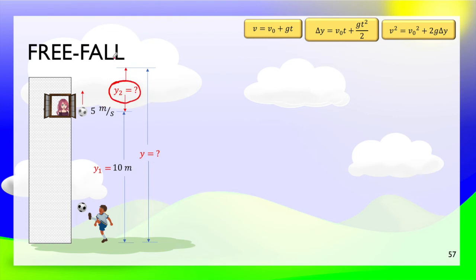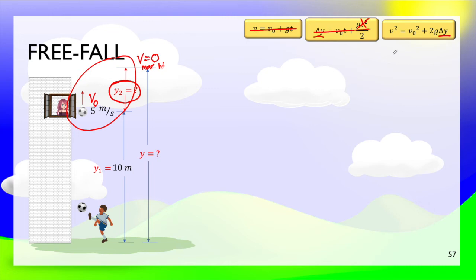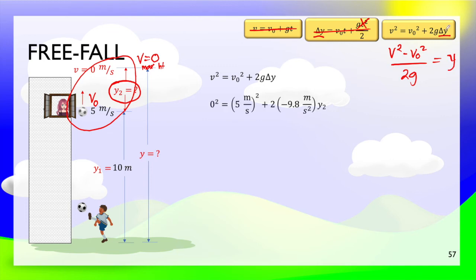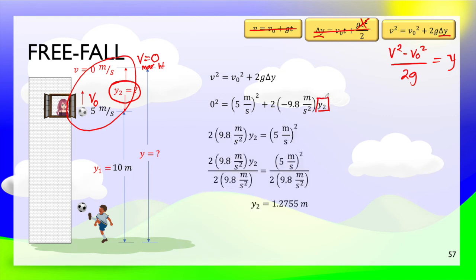To find Y2, we focus on the segment from the window to the maximum height. At the max height, velocity is 0; the initial velocity at the window is 5 meters per second. We don't have time, so we won't use the time-dependent equations. We'll use the formula: Y equals v squared minus v-naught squared divided by 2g. You can also substitute and solve for y that way.